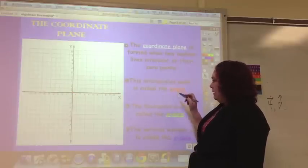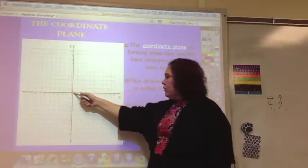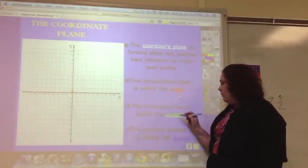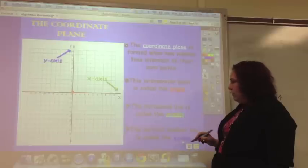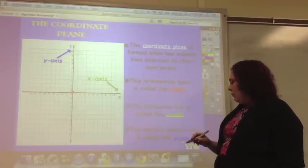The intersection point is called the origin. Then the horizontal line is called the x-axis, and the vertical axis is called the y-axis.